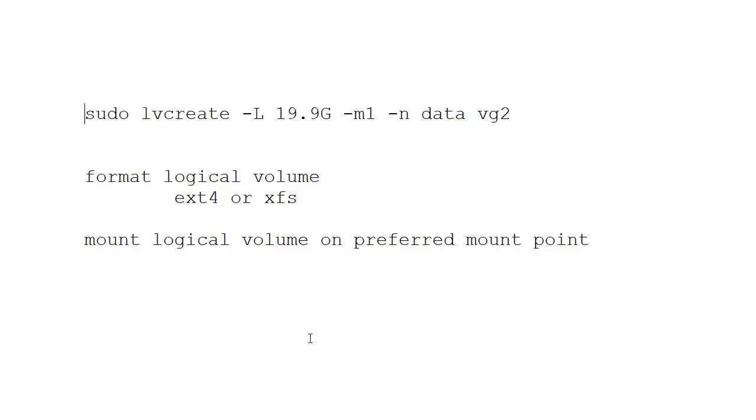So, this is the command then. So, again, we're using a 20 gigabytes, and the -m1 means that we are making one mirrored copy. It means that we're having two drives, one as the original drive, one as the mirror, and then again, the name of the logical volume and the volume group from which we are creating that logical volume.